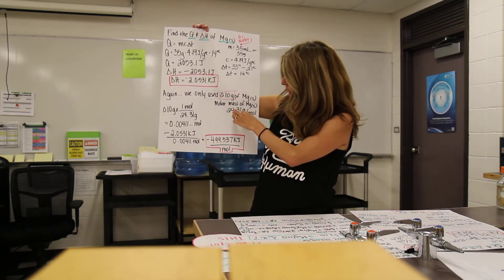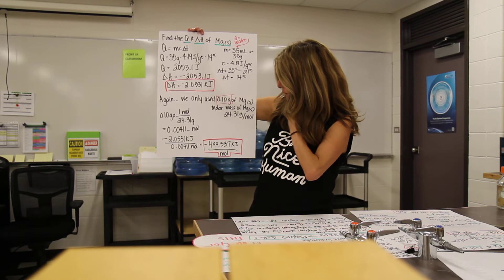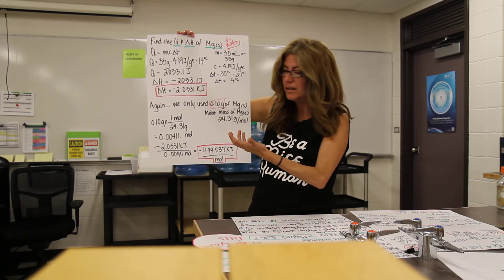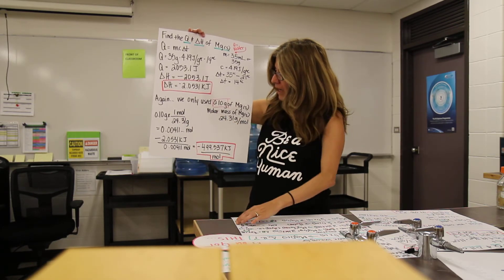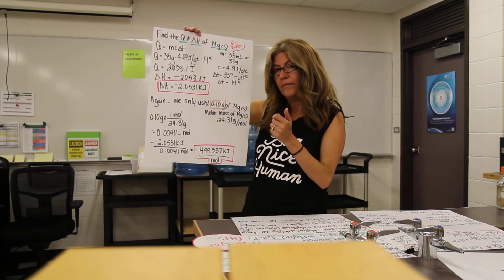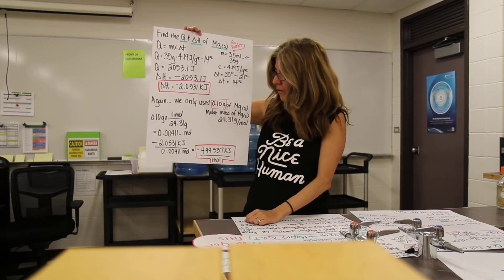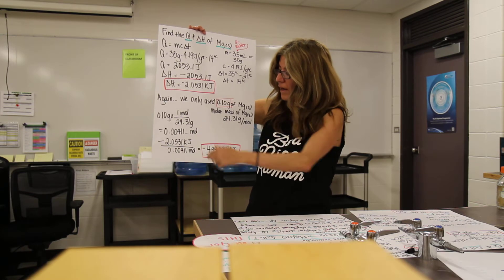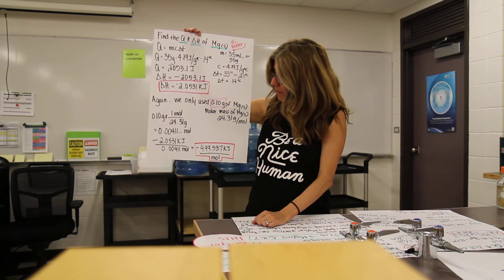So now, my molar mass of magnesium is 24.31 grams per mole. That's out of your data booklet, nothing fancy there. 0.1 grams, and we're going to multiply it by the molar mass. One mole on top, 24.31 grams on the bottom, grams cancel out. And I get 0.00411 moles.